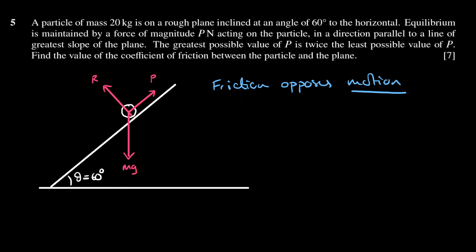We've got two cases in this question. The first case is that the object is just about to slide down the plane. If the object is about to slide down, then friction is going to be acting up. In this case, the force P combined with the friction force balances the weight component down the plane — P is a lower value because it's being assisted by the friction.